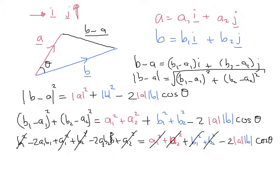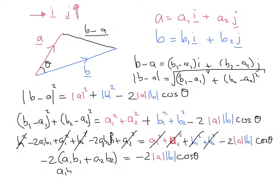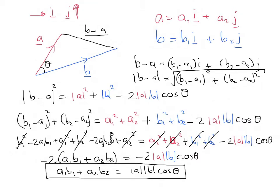This is tidying up nicely. We get minus 2 as a common factor, so minus 2 times (a1b1 plus a2b2) equals minus 2 times |a| times |b| times cosine theta. Dividing through by minus 2, a1b1 plus a2b2 equals |a| |b| cosine theta. So all this formula is: a1b1 plus a2b2 equals |a| |b| cosine theta — that is the cosine rule result. I'm going to write it out again and change the colours so you can see where the a's and b's are.